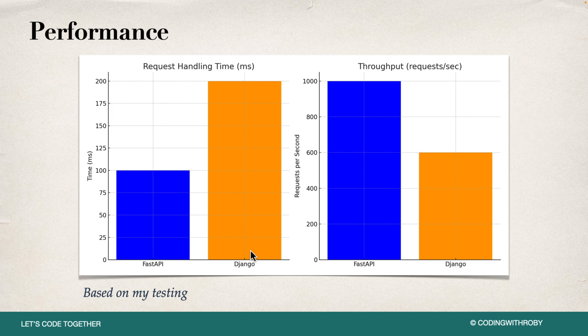Looking at the test results: Django is hitting about 200 milliseconds for request handling time, while FastAPI is hitting 100 milliseconds — that's twice the speed hitting the exact same endpoint. For throughput, it's not twice as fast, but there is a 40% decrease when using Django over FastAPI. This was tested by load balancing the exact same endpoint for FastAPI versus Django. Django has to do more work because it's a bigger framework — it's harder just to hit the endpoint, get the data, and return it.